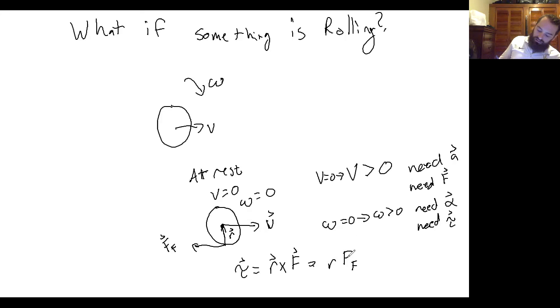And then assuming you know what the force of friction is, you could replace, or assuming you knew what the free body diagram looked like, you could replace this friction with mu times the normal force. And then using Newton's second law, you can figure out what the normal force is. So in order to have something that's rolling, you need to have a force that is causing it to roll, and that force has to be acting some distance away from the axis of rotation so that it's generating a torque.